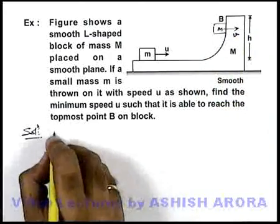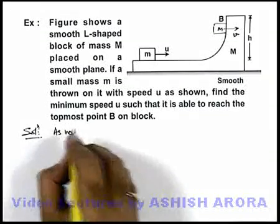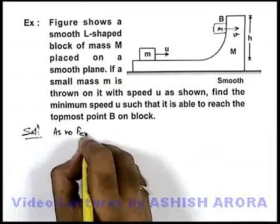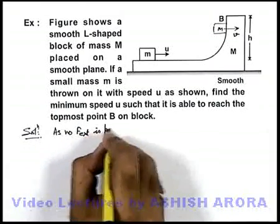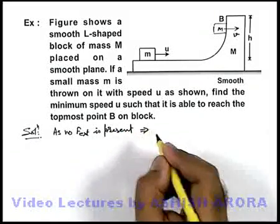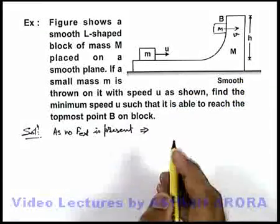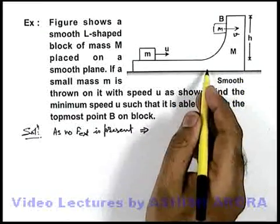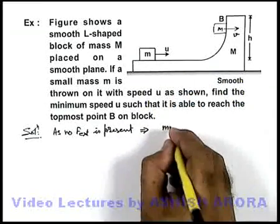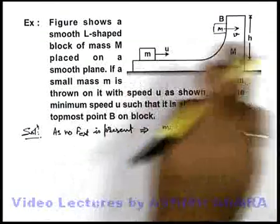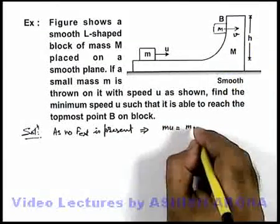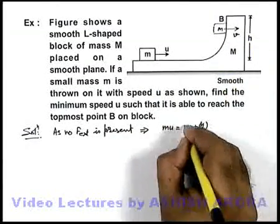So here we can say, as no F external is present on this system, this implies total momentum will remain conserved. So initially as capital M was considered to be at rest, the momentum was only m u, which must be equal to in horizontal direction finally small m plus capital M into v.